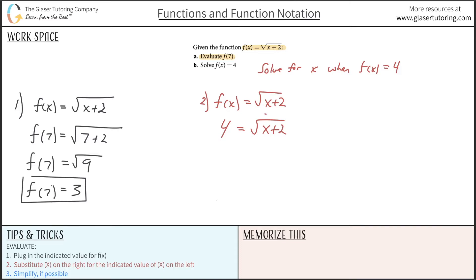The first thing is you probably realize that we've got to get rid of this square root. So how do we get rid of a square root? We square. If we square the right, we better square the left. So 4 squared is 16. And then now we just cancel the square root. So this is just x plus 2 now.